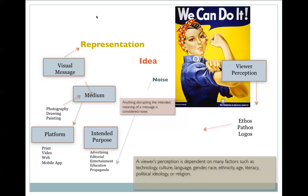There are so many factors at play when talking about somebody's perception — things like language, gender, race, political ideology — all those things fit in. And then we think about the viewer's perspective. We can think about what Aristotle looked at: those three things — ethos, pathos, and logos.